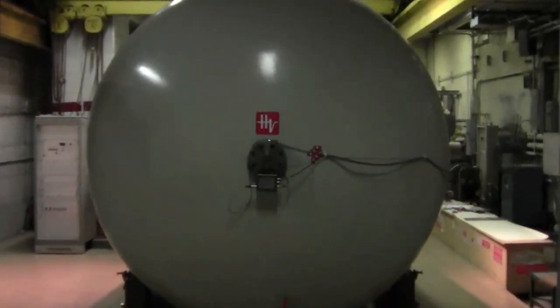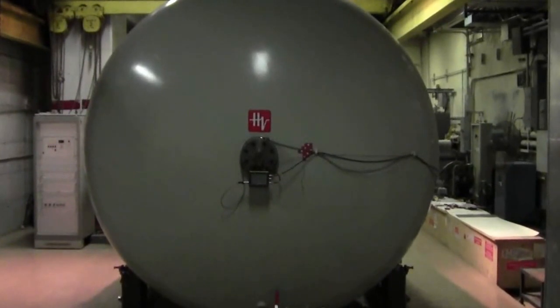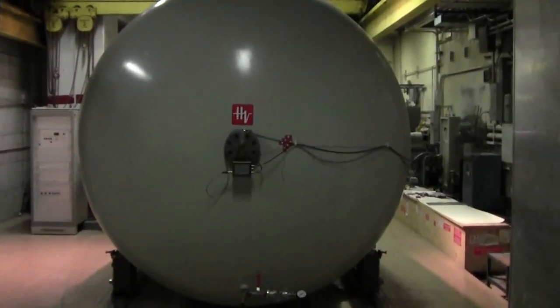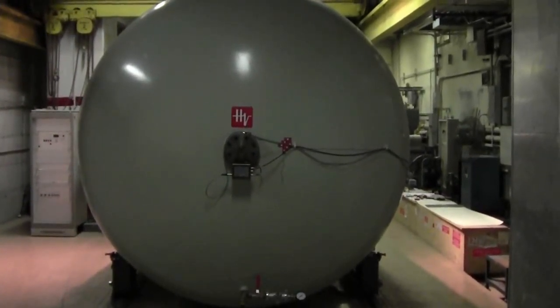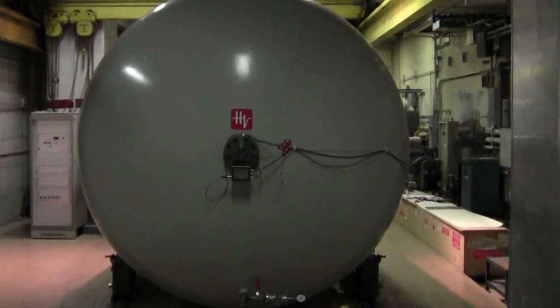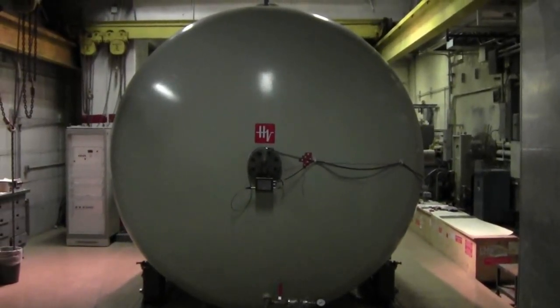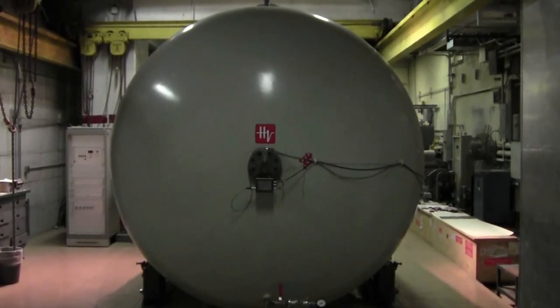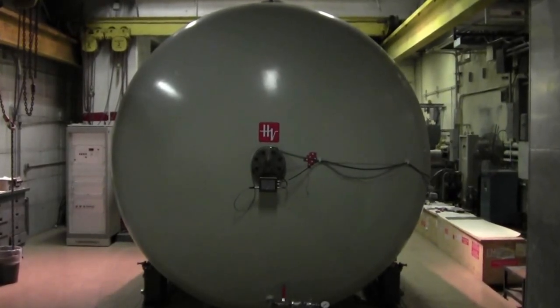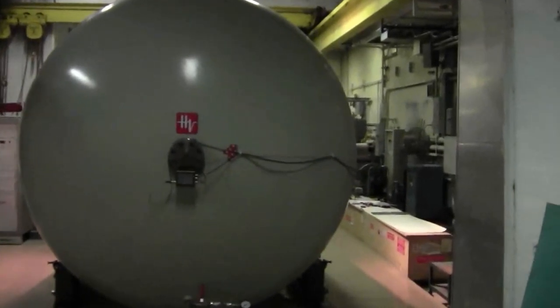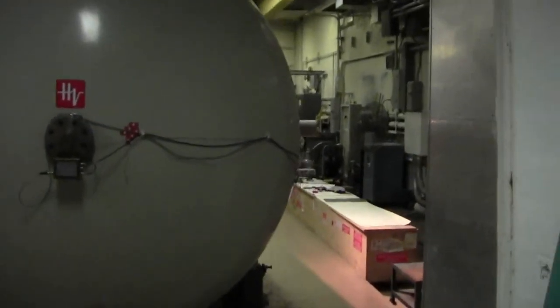The accelerator is contained in this large tank that is filled to over 5 atmospheres pressure with an insulating gas to inhibit sparking. Inside the terminal, positive ions of hydrogen or helium isotopes are produced in a plasma. The ions are extracted from the ion source and repelled by the positive charge in the terminal which accelerates them as they move toward the other end of the accelerator.